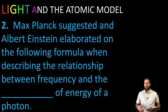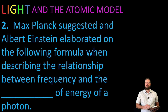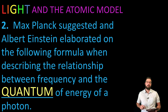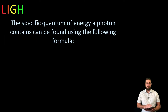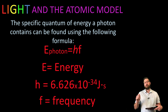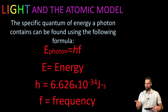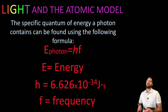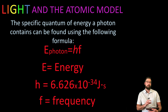Max Planck suggested, and Albert Einstein elaborated on, the formula describing the relationship between frequency and energy — specifically the quantum energy of a photon. The equation is E = hf: the energy of the photon equals Planck's constant times the frequency. Planck's constant is 6.626 × 10⁻³⁴ joule·seconds, and it does not affect significant figures. If you have energy, use this equation to find frequency, and vice versa.